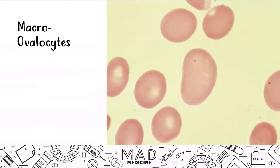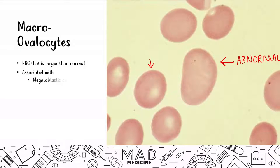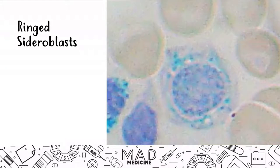Macro ovalocytes are red blood cells that are larger than normal — that's exactly what the name says. This is abnormal. These are associated with megaloblastic anemia as well as bone marrow failure, because you go from megalocytes to normal-sized cells. If your bone marrow isn't producing red blood cells properly, you're going to have macro ovalocytes.